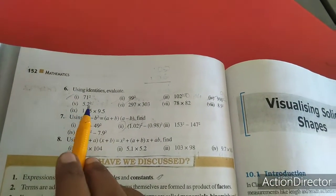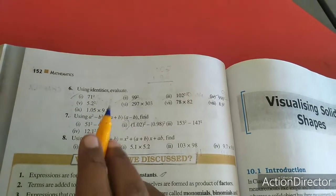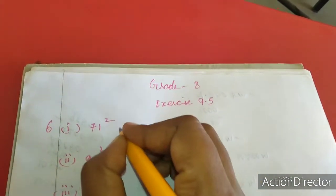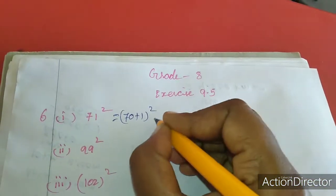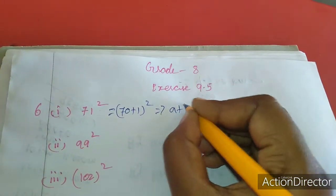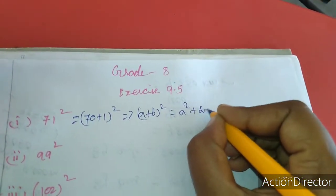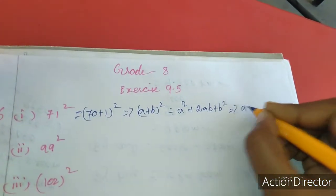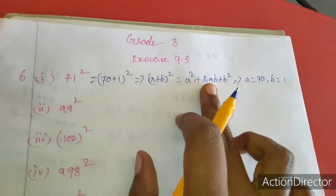The first sum is 71 squared. We split it as 70 plus 1, the whole square. This uses the a plus b whole square formula: a squared plus 2ab plus b squared. Here a value is 70 and b value is 1. Substitute and evaluate.